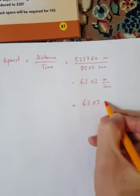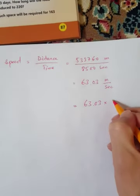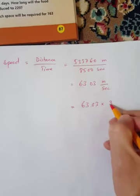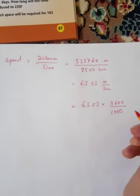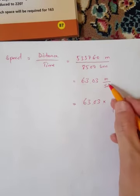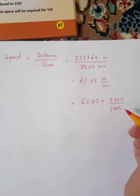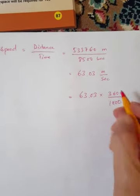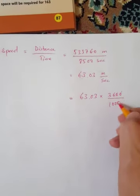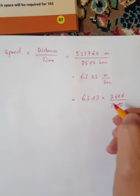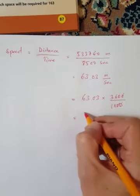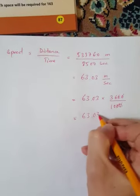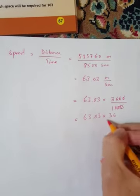Now we need to change it to kilometer per hour. To change from meter per second to kilometer per hour, we multiply by 360 and divide by 1,000.